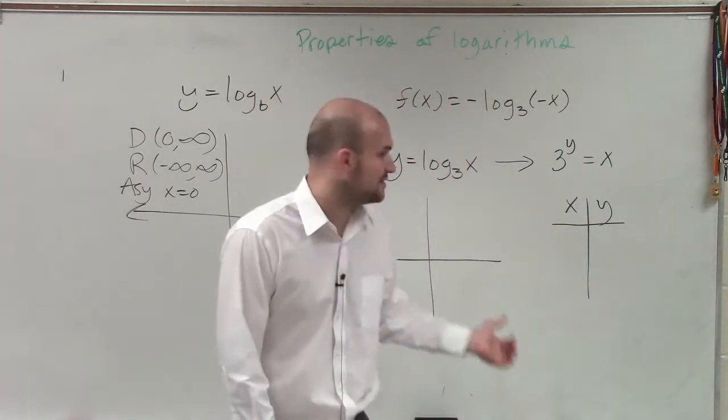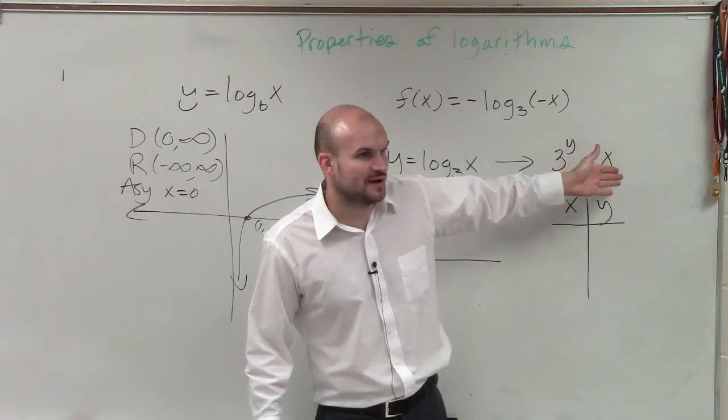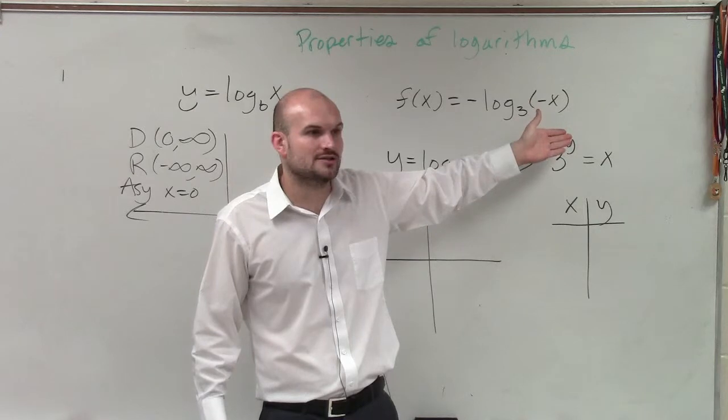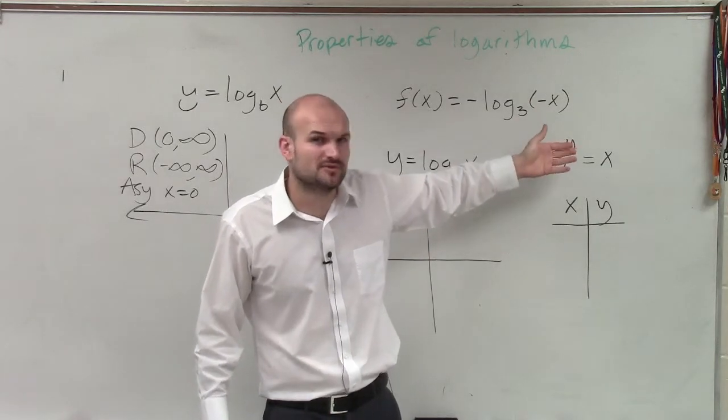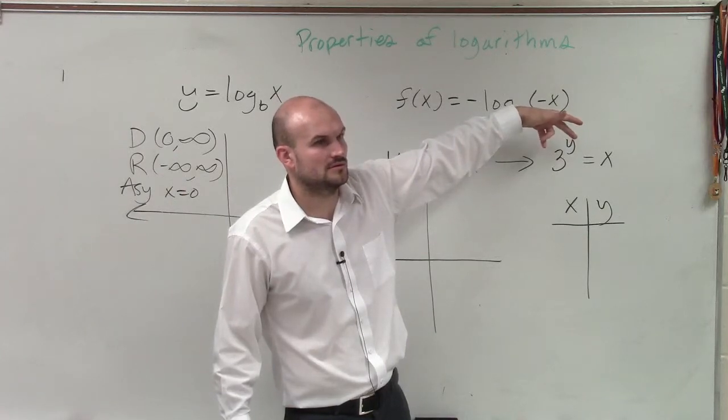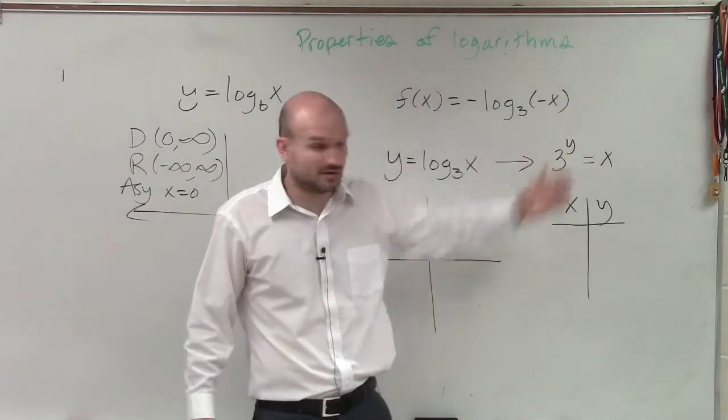Now I need to choose a table of values. I can choose a table of values for x, but it's probably easier to choose a table of values for y because that's what you're raising to the power. You want to pick simple numbers. So what values do you want to raise 3 to? 0 and 1 would sound good, right?